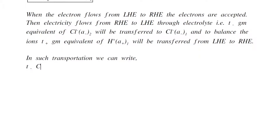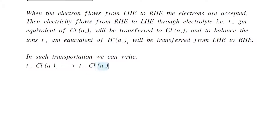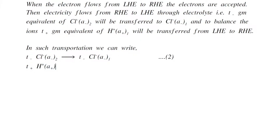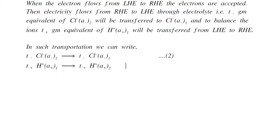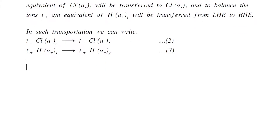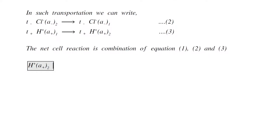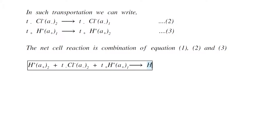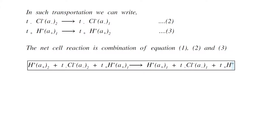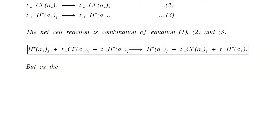T-minus gram equivalents of chloride ions are transferred from activity a2 to activity a1 (equation 2). Similarly, t-plus gram equivalents of H+ ions from activity a1 are transferred into activity a2 (equation 3). The net cell reaction combining all three equations: H+ ions of activity a2 plus t-minus gram equivalents of Cl- of activity a2 plus t-plus gram equivalents of H+ of activity a1 are transferred to H+ of activity a1 plus t-minus gram equivalents of Cl- of activity a1 and t-plus gram equivalents of H+ of activity a2.